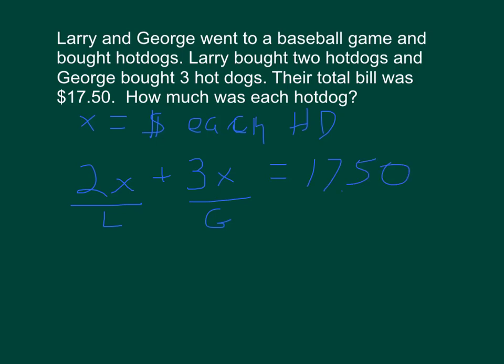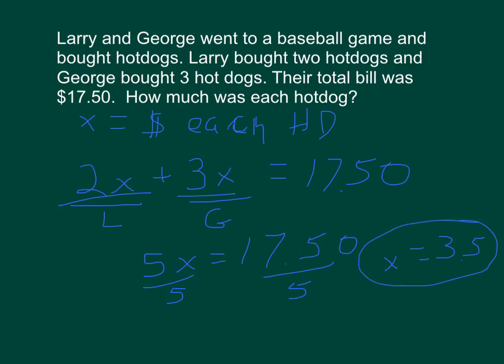The labels here just represent Larry and George — we're not dividing by L, so don't be confused by that. Combining like terms: 2x plus 3x gives us 5x — that's five hot dogs total — equals $17.50. We divide both sides by 5 and get x equals $3.50. So each hot dog was $3.50. Larry bought two hot dogs for a total of $7, and George bought three for $10.50. That checks out — makes sense.